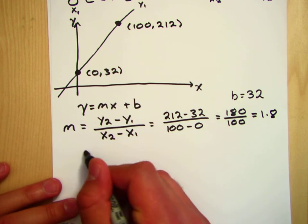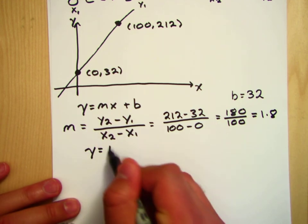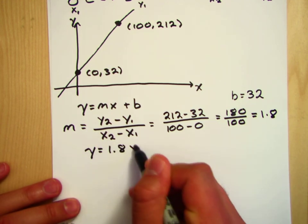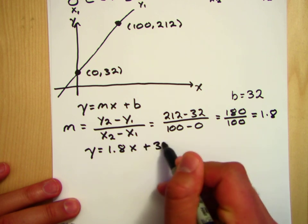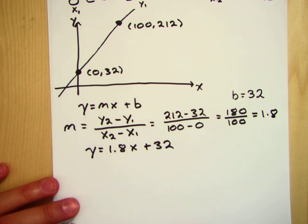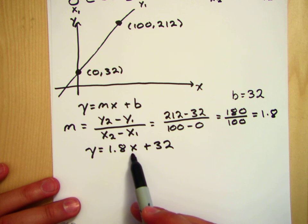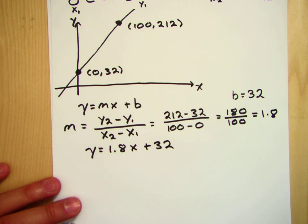So y is equal to 1.8x plus 32. And maybe you've heard this before, you take the temperature in Celsius, multiply by 1.8 and add 32.